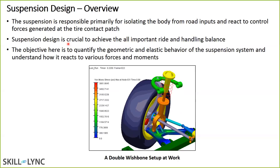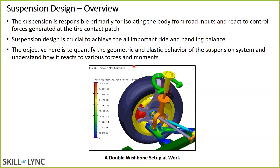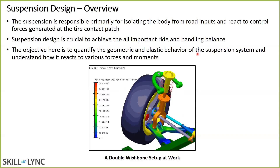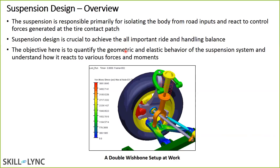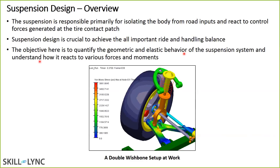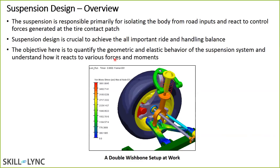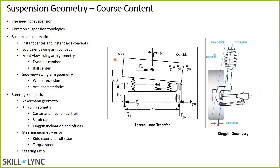From a course perspective, the objective is to quantify the geometric and elastic behavior — kinematics and compliance. Geometric refers to kinematic behavior; elastic refers to compliance like bushings. We'll look at a lot of suspension topologies: wishbone, McPherson strut, multi-link, and various suspension architectures. We'll study the different architectures, compare their advantages and disadvantages.